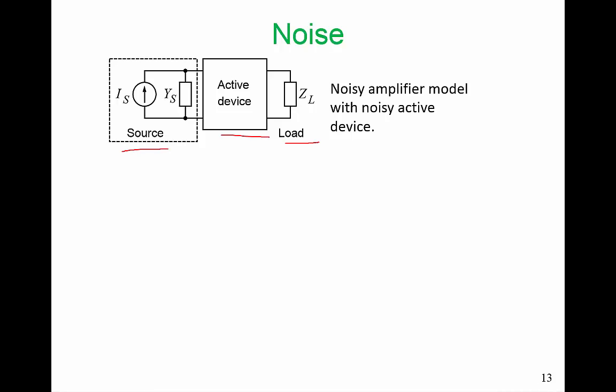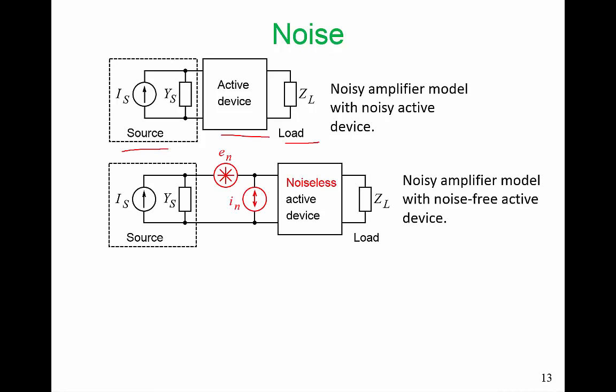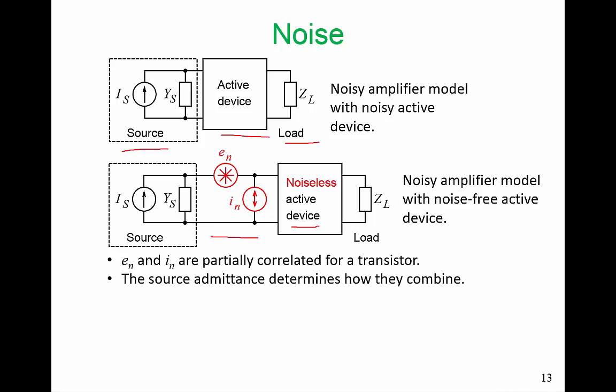In about 1960, people realized that a noisy two-port could be represented as a noiseless two-port with noise sources. Here is our noiseless active device and two noise sources. EN and IN are our noise sources, and they are partially correlated for a transistor. And the source admittance, YS, determines how they can combine. And that indicates that noise could be minimized by choosing the right YS.